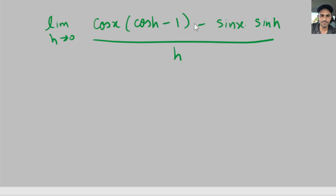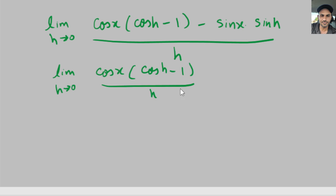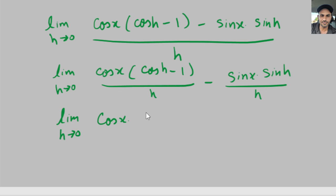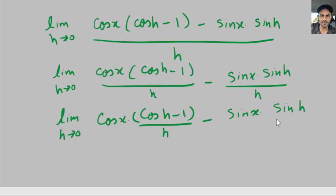Now I'm going to break this into two separate fractions. So we get the limit as h goes to zero of cosine of x times the quantity cosine of h minus one over h, minus sine of x times sine of h over h.